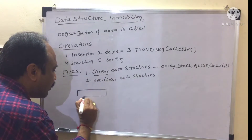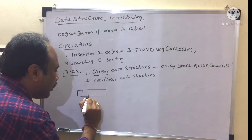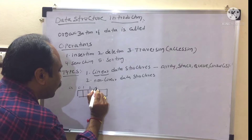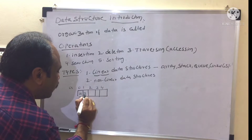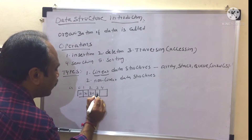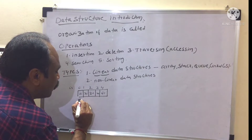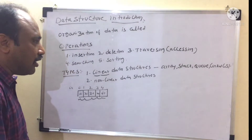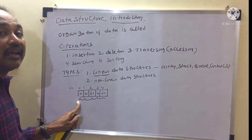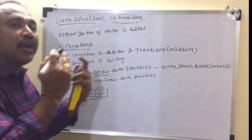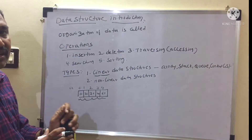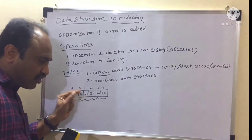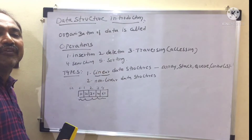All these are examples of linear data structures. For example, with an array of size five — indices zero, one, two, three, four — I store values 10, 20, 30, 40, 50. When I am storing, I am storing in sequential manner; I am accessing in sequential manner. Hence it is referred to as linear. Sequentially means one by one — I am going to access them.